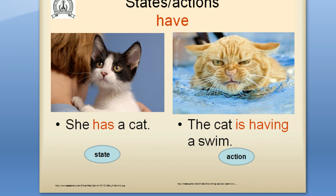Verb: have. 'She has a cat' — it's a state verb; it means this cat belongs to her, she owns a cat. Example 2: 'The cat is having a swim' — it means it is swimming, so it's an action verb.